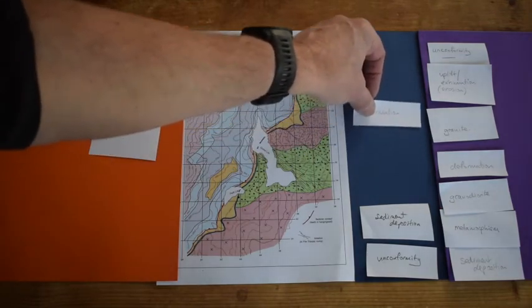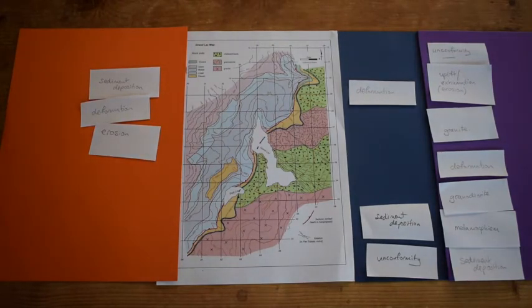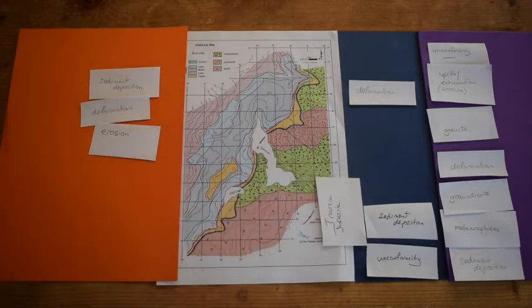I'm going to put that deformation up here so we don't get confused as to what's going on. Let's simply say what these various units are that are in here. So the sediment deposition at the bottom is Triassic through Jurassic.